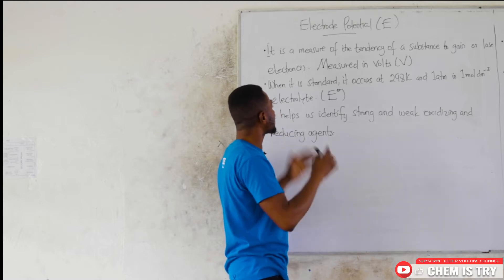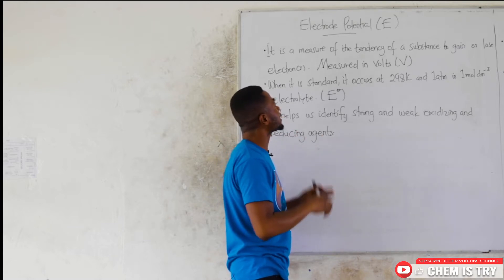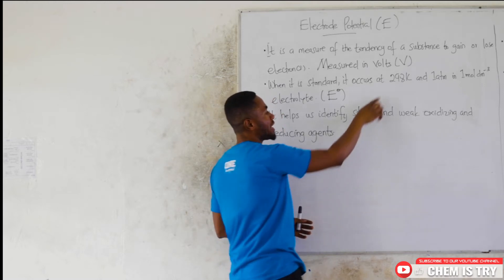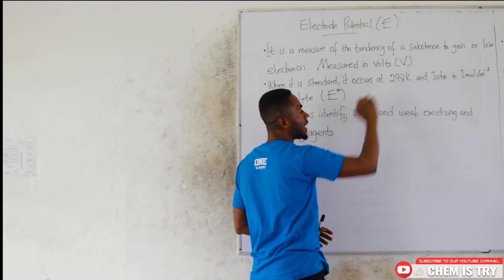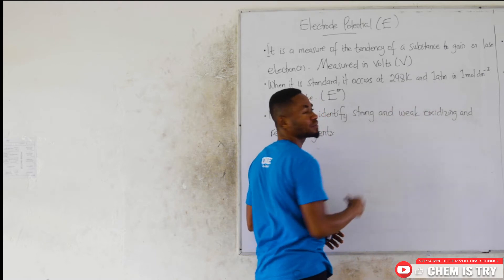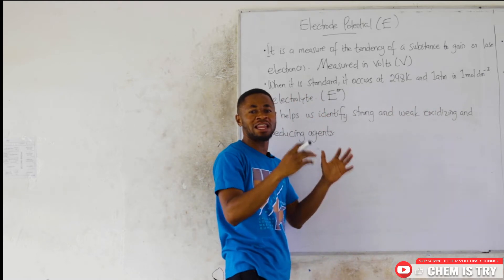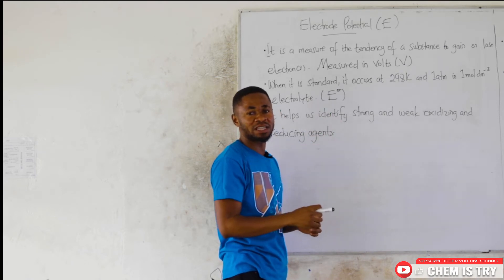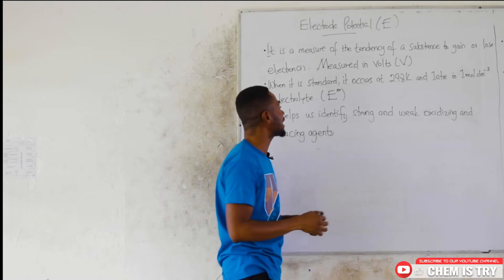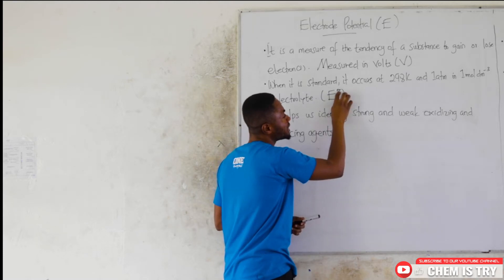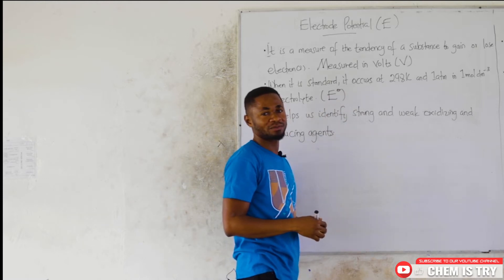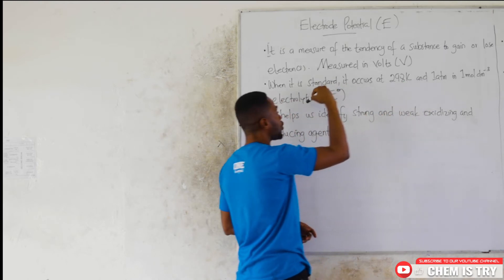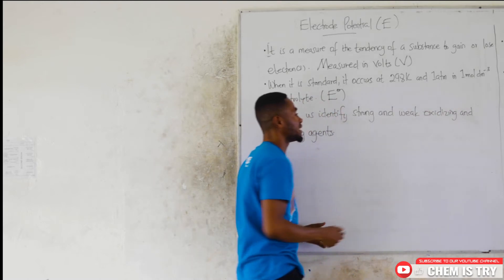When it's a standard, we call it a standard electrode potential. It means that it is occurring at 298 Kelvin temperature, 1 atm pressure, and the concentration of the electrolytes you are going to make use of is supposed to be 1 mole per decimeter cube. If it is standard, we bring this small degree sign on top of the E, and that tells us it is occurring at 298 Kelvin, 1 atm, and the concentration of the electrolyte is 1 mole per decimeter cube.